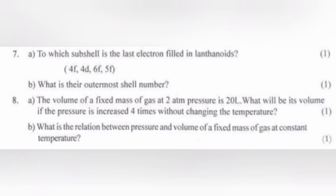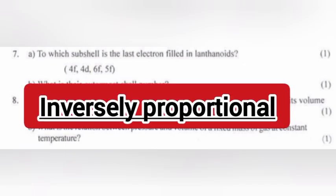Question 8a: The volume of a fixed mass of gas at 2 atm pressure is 20L. What will be its volume if the pressure is increased four times without changing the temperature? Answer: 5L. Question 8b: What is the relation between pressure and volume of a fixed mass of gas at constant temperature? Answer: inversely proportional.